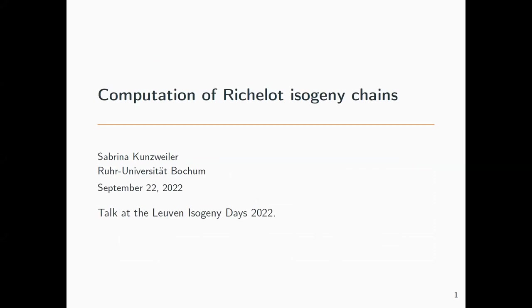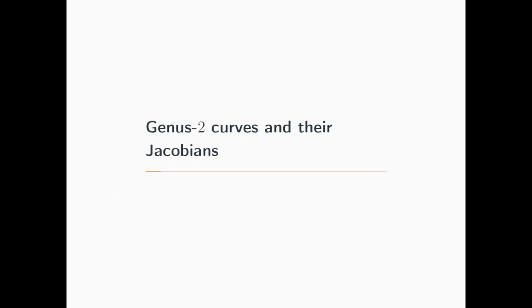I'll talk about the computation of Richelot isogeny chains. Those are a special type of isogenies on the Jacobians of genus 2 curves. Yesterday we already heard a lot about those and also about computing more general isogenies on abelian varieties. My talk will focus on only this case of Richelot isogenies. I'll start by giving some more details on the general setting of genus 2 curves and their Jacobians.